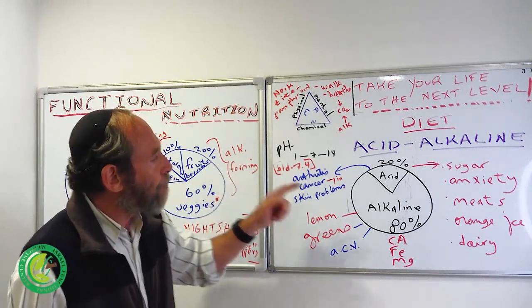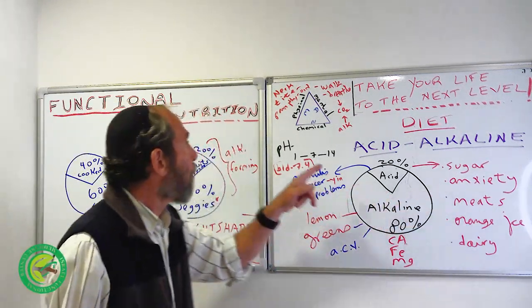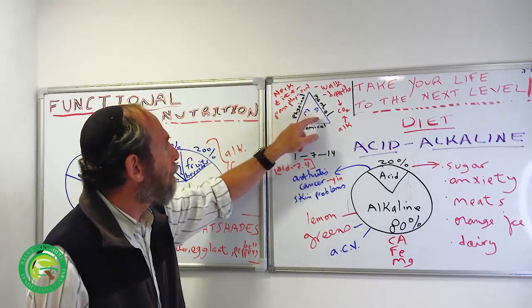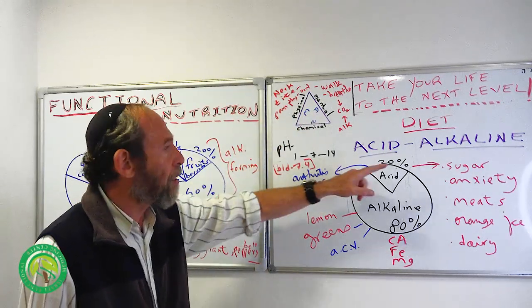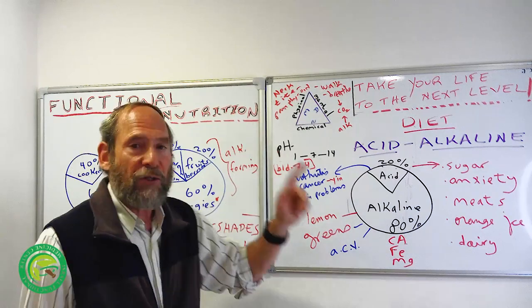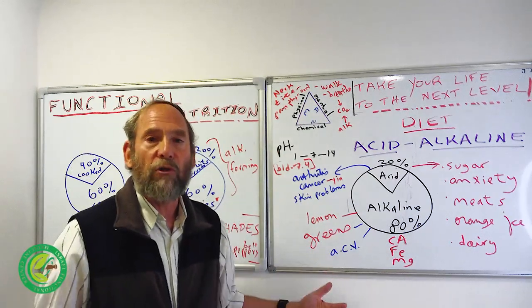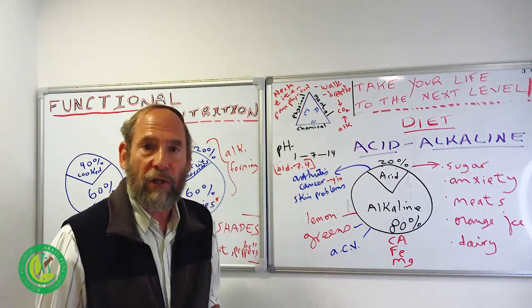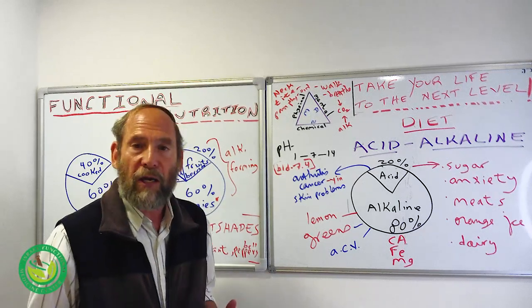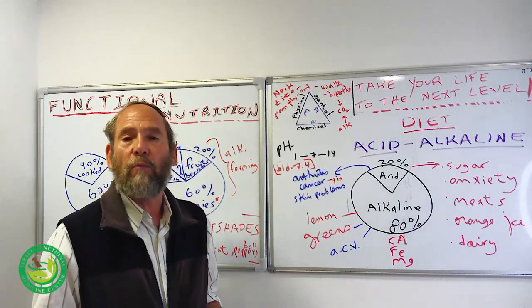Now, so if we look at the holistic triangle, I put over here anxiety, because there's a mental component to everything, including acid and alkaline. So anxiety, worry, negative emotions, resentment, jealousy will create in our bodies an abundance of acid.